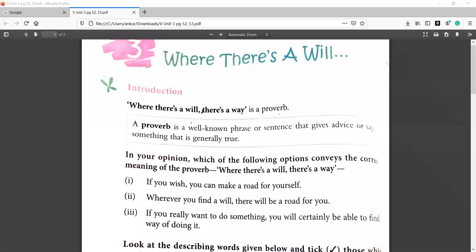Students of class 5th, we are going to do the third unit of English reader and the theme of this particular unit is where there is a will, there is a way.